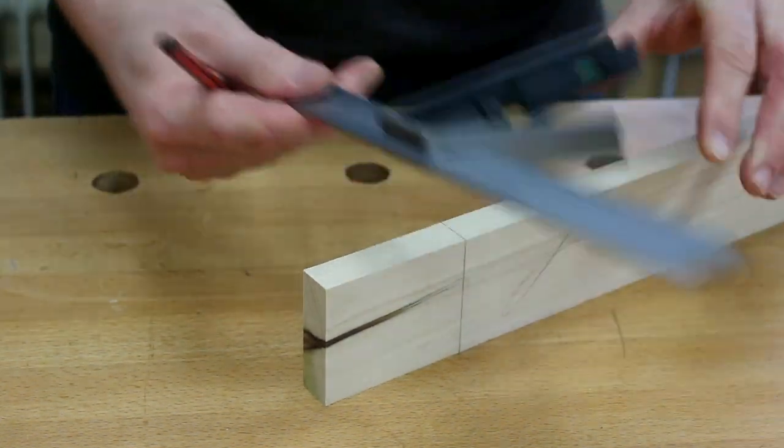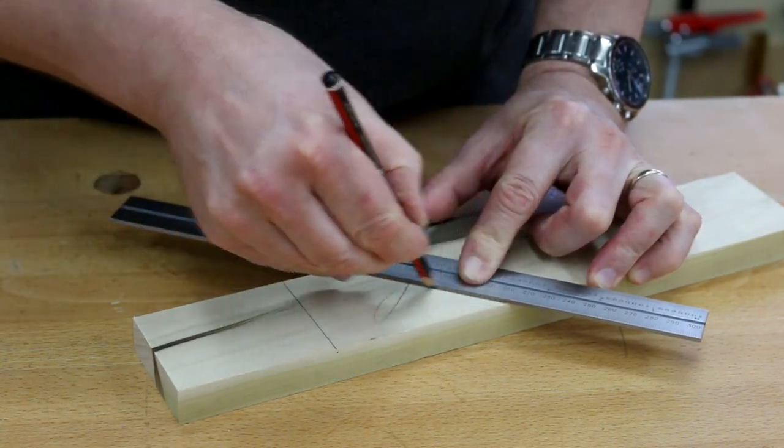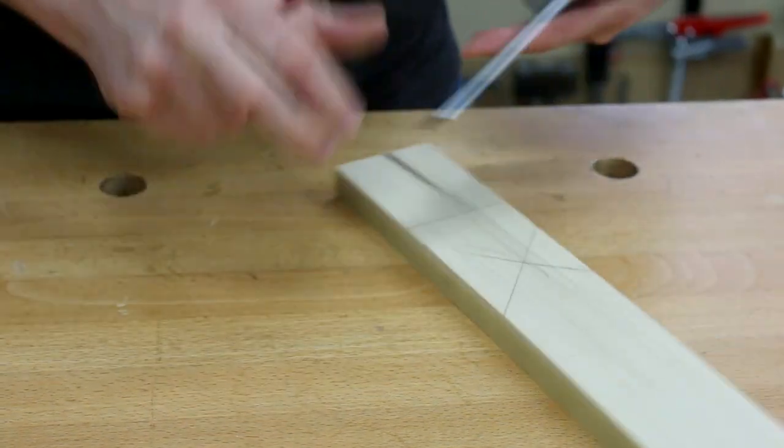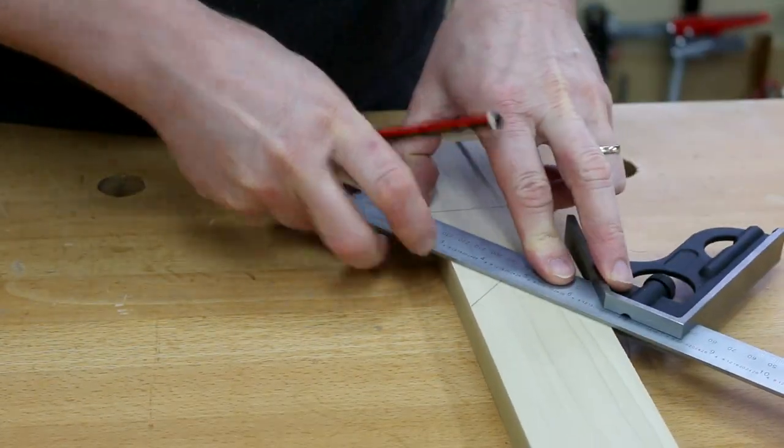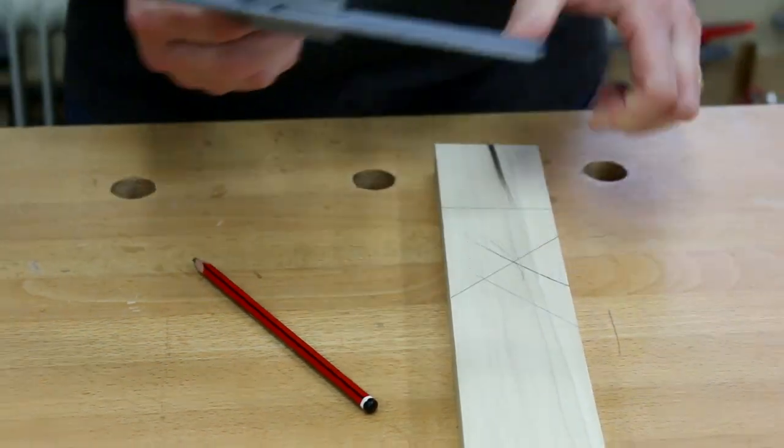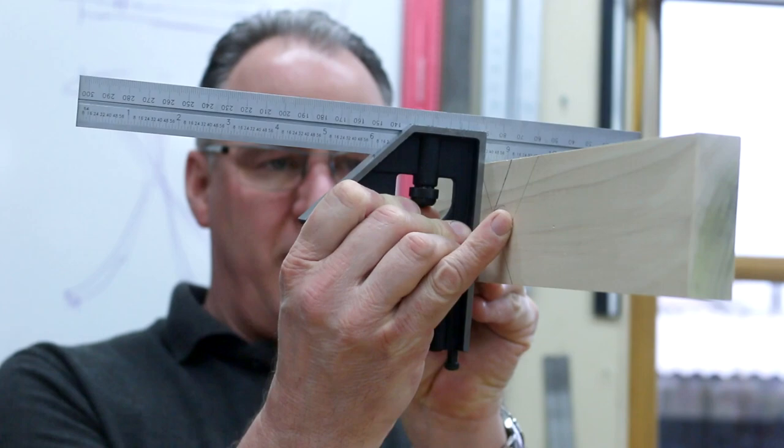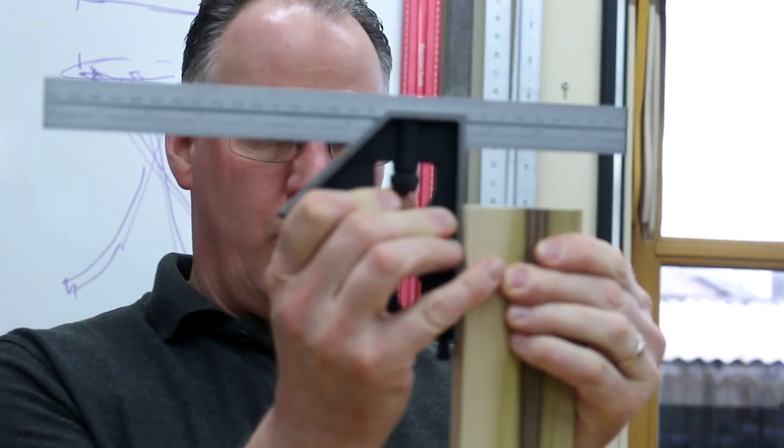Or you might use it for 45 degrees - you can mark your lines on there, come back as a square from the other way if you were doing like a bird's mouth. We can also use it for testing how true our timber is, both face side to face edge or on your end grain.